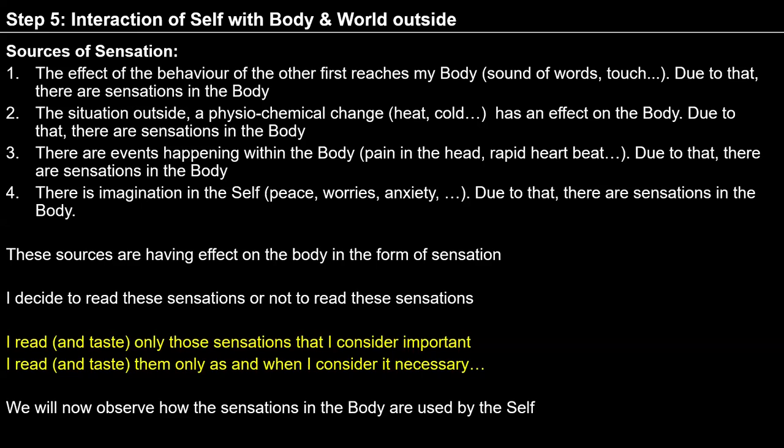In step 5, we are going to see the sources of sensation. We are trying to see sensations happening in the body, and now we are going to explore what are the sources of those sensations. There are 4 possible sources. Number 1: the effect of behavior of the other. Whenever I interact with another person, their behavior first reaches my body. For example, when a person says good morning, their voice — a sound — comes to the ear of my body and reaches the eardrum.